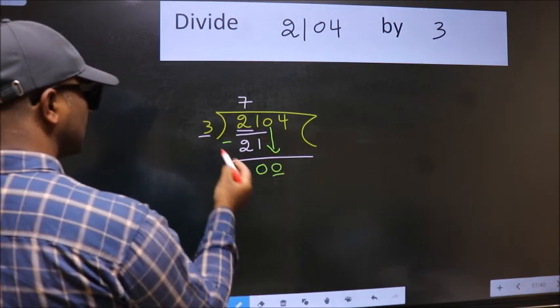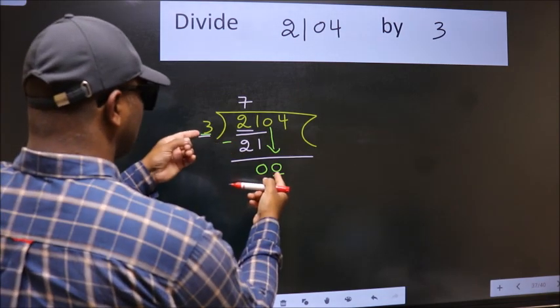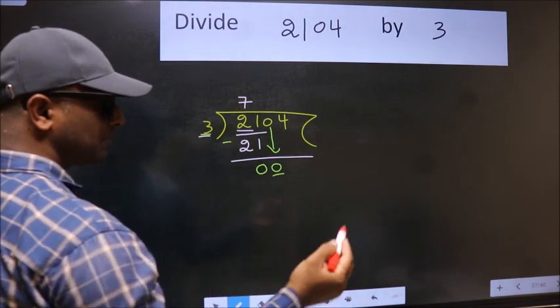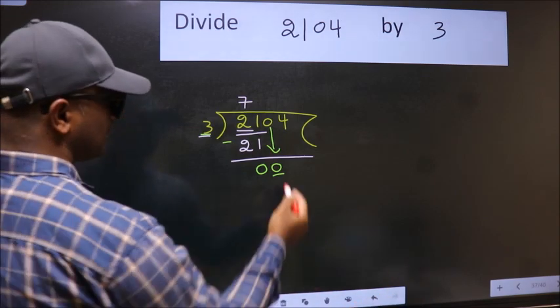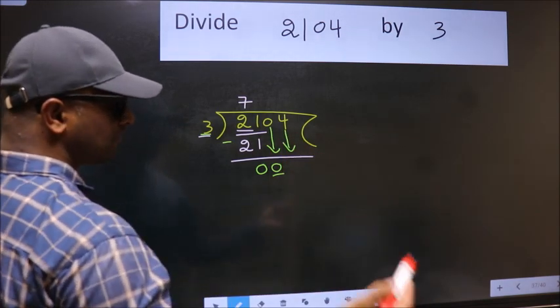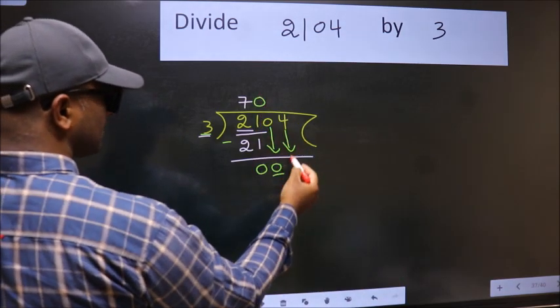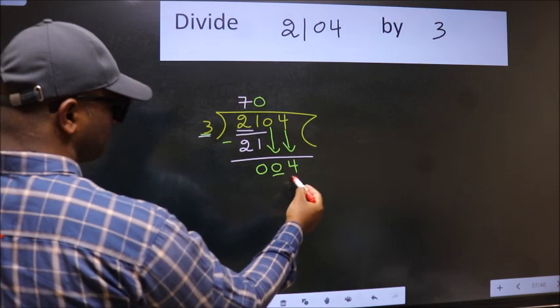Now, here we have 0 and here 3. 0 is smaller than 3. So, we should bring down the second number. And the rule to bring down second number is put 0 here. Then only we can bring this number down. So, 4.